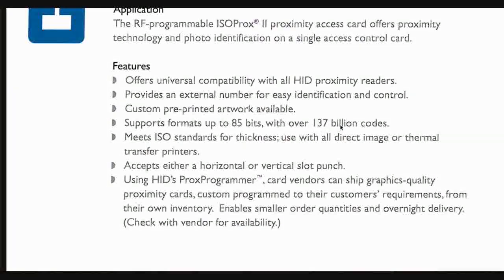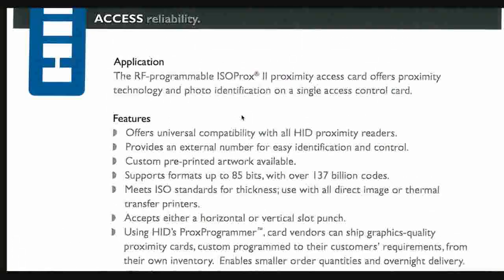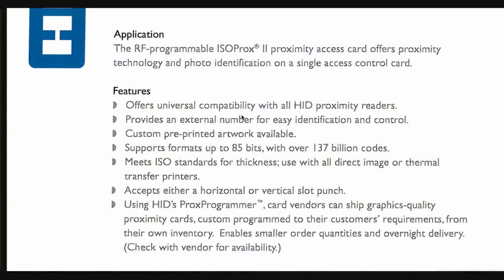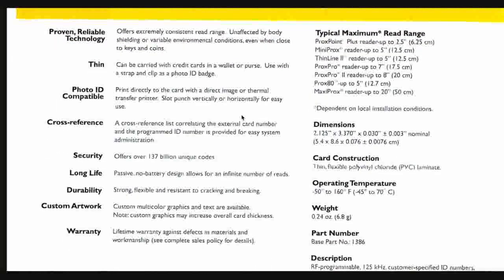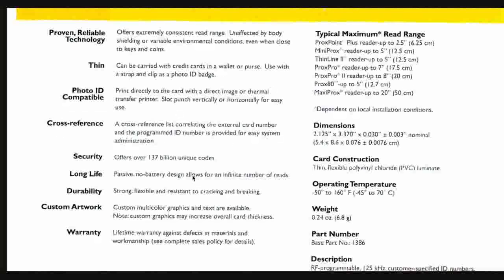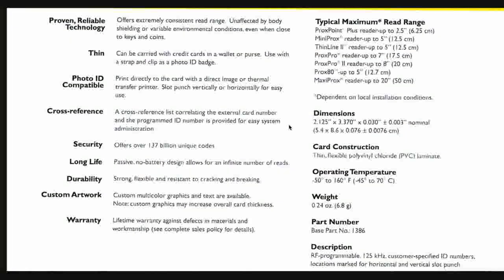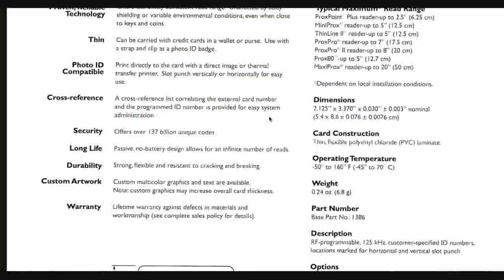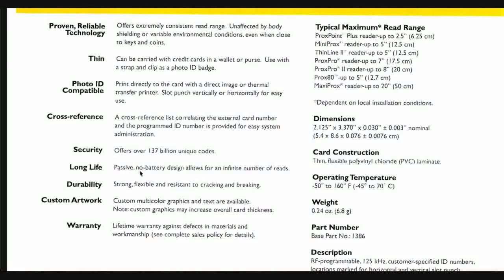The card supports formats up to 85 bits and over 137 billion unique codes. As mentioned, there are two types of cards — 125 kHz with its advantages and disadvantages, and MIFARE cards with their advantages and disadvantages. Here we are focusing on the sensitive or important data in the datasheet.